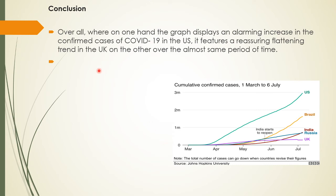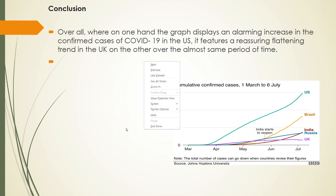Now the conclusion: 'Overall, where on one hand the graph displays an alarming increase in the confirmed cases of COVID-19 in the US, it features a reassuring flattening trend in the UK on the other, over almost the same period of time.' So on one hand there's an alarming increase, but on the other there's a reassuring sign with the UK, and the rest of the countries trail in between. This is a complete example of writing an analytical paragraph for a line graph on a current topic — the most expected type for board exams.